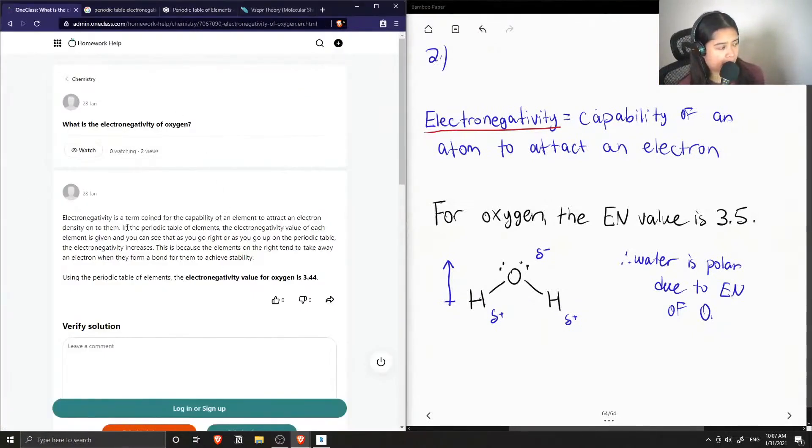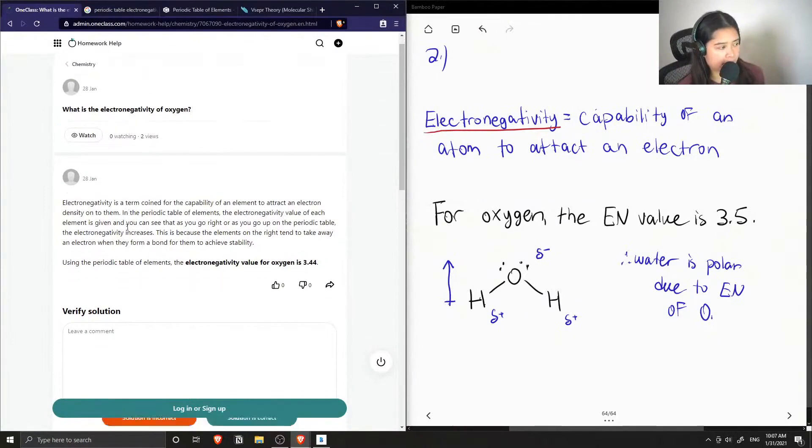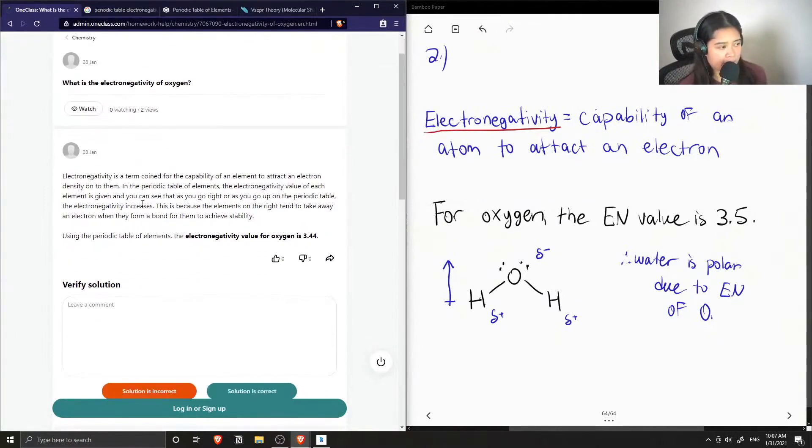Okay, so the junior tutor said that electronegativity is a term coined for the capability of an element to attract electron density to them. In the periodic tables, the electronegativity value of each element is given.